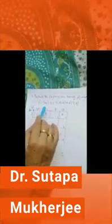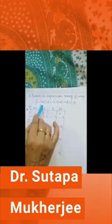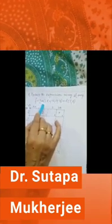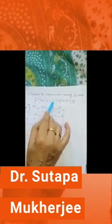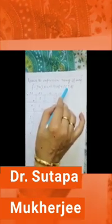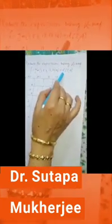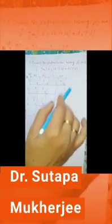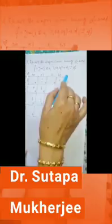Now we come to the problem. The function is the summation of M(1, 5, 6, 12, 13, 14) plus D(2, 4). D means don't care.